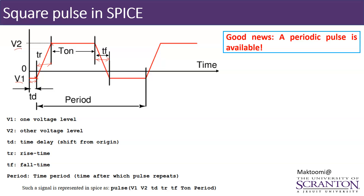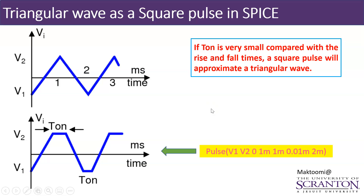The way you describe this pulse in SPICE is: you start with the keyword PULSE, then the initial voltage level V1 (or initial current level I1 if it's a current source), then V2, then TD the delay time — if it starts rising right at the origin then TD is zero — then TR the rise time, then TF the fall time, then Ton the high time of the waveform, and finally the period of the waveform.